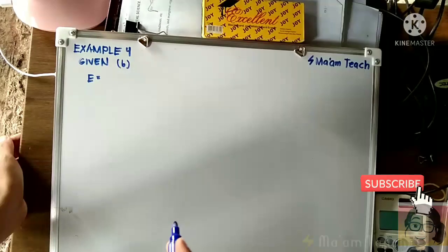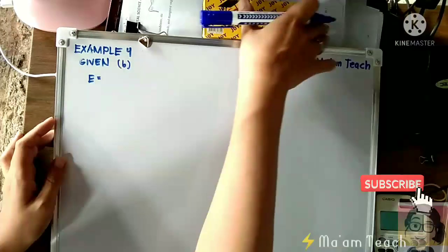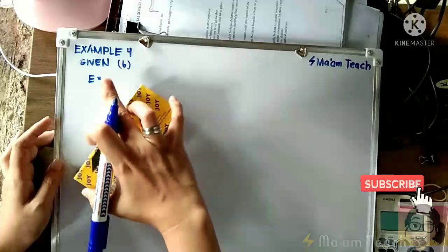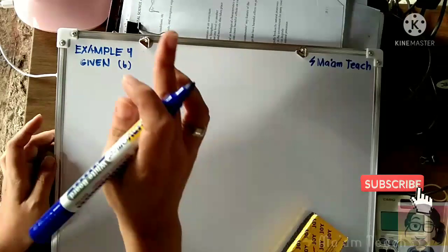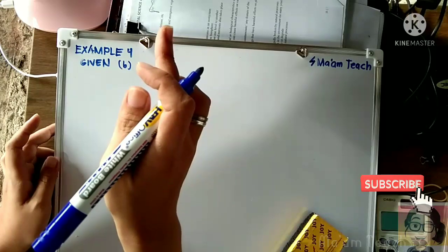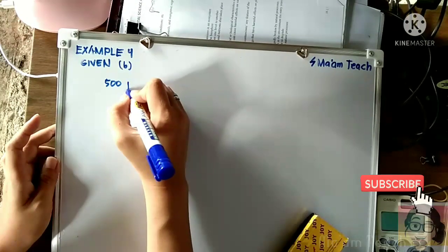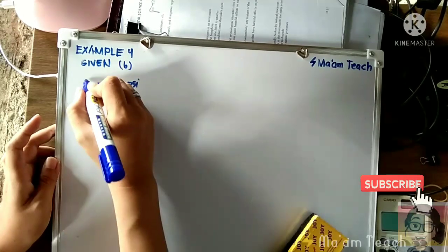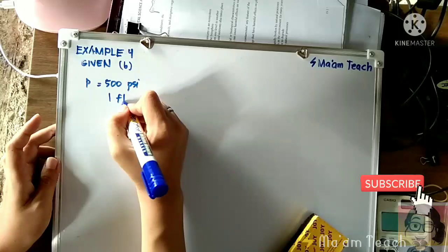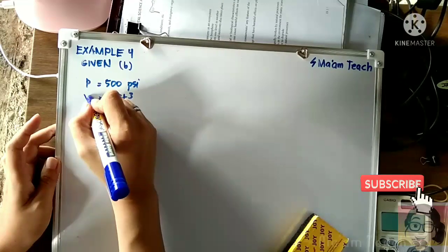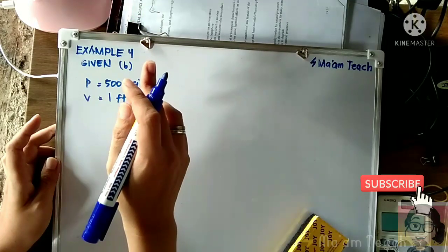Okay, so we have here Example 4b. We are given 500 psi, so obviously this 500 psi is the pressure. The volume was 1 cubic foot. Take note, we are also given another value: 3,500 psi.